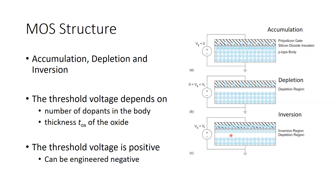Usually this threshold voltage is positive, as we have seen in this figure, but you can actually engineer it to be negative. That is achieved by adjusting the doping concentration in the body and modulating the thickness of the oxide to create such a MOS structure.